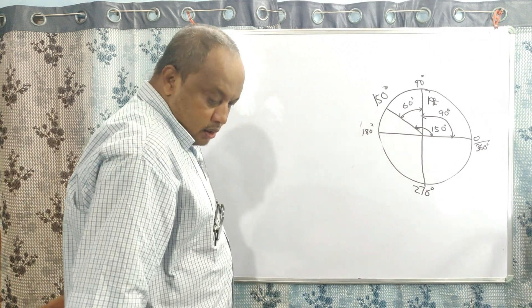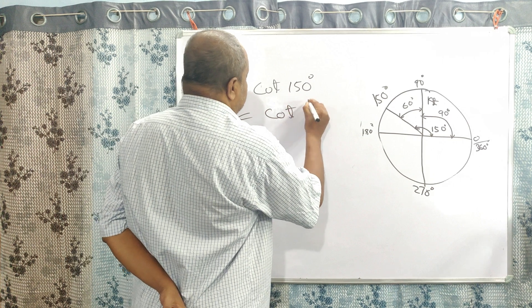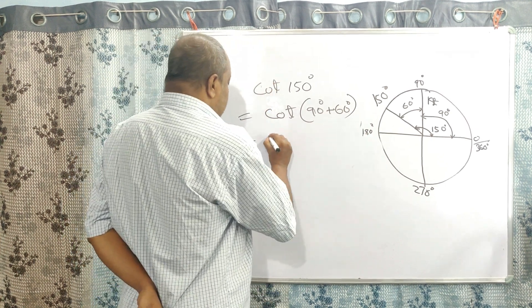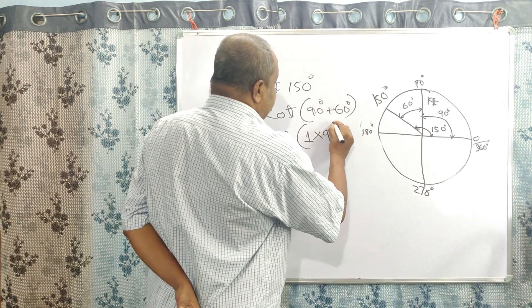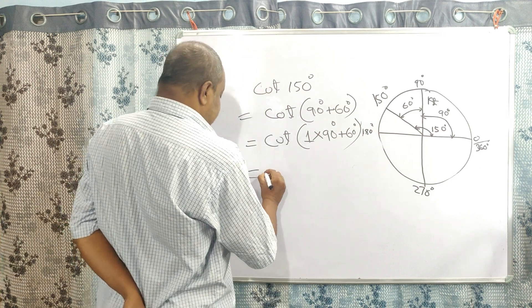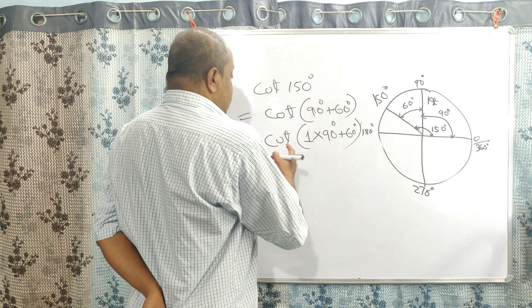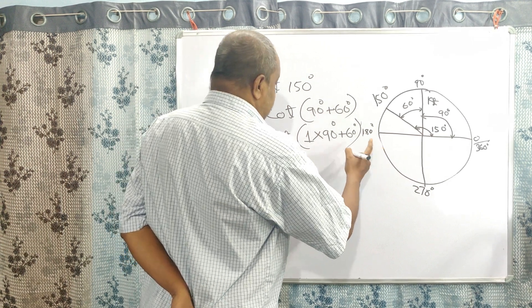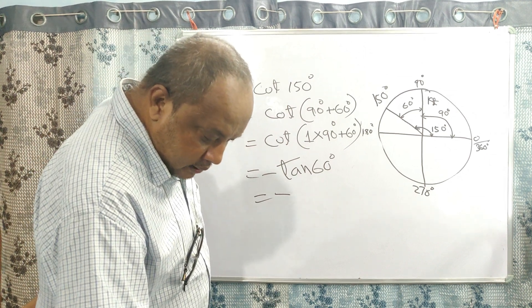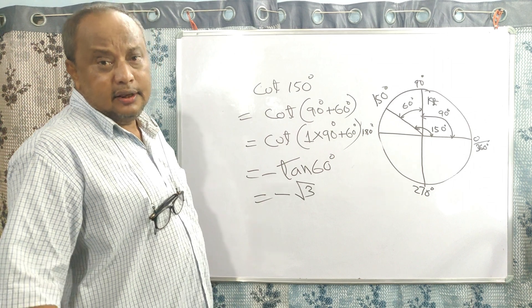Now next, cot of 150 degrees. So cot(150°) = cot(90° + 60°) = cot(1×90° + 60°). In this case cot is also negative in the second quadrant, so a minus sign comes. Since 1 is an odd number, cot is converted to tan and the angle is 60 degrees. So cot(150°) = minus tan(60°) = minus √3.